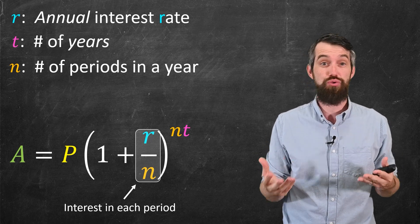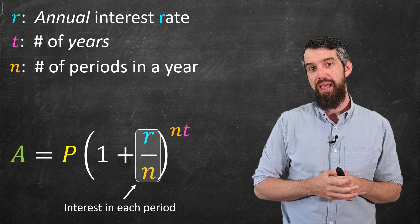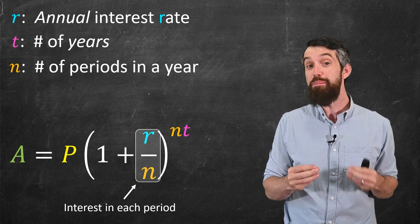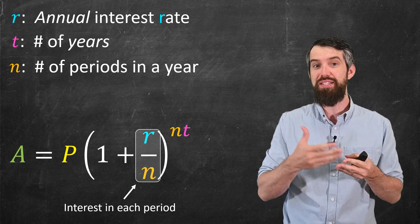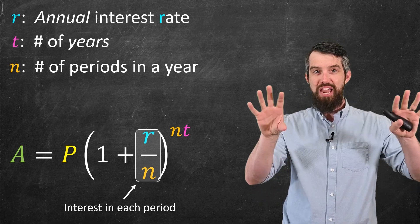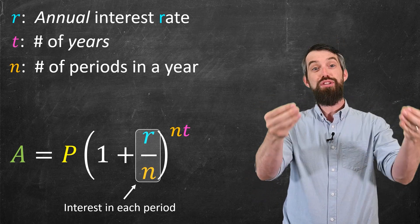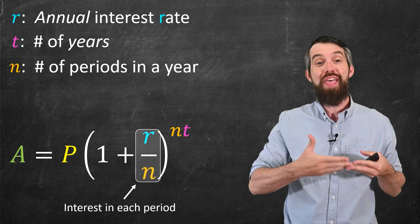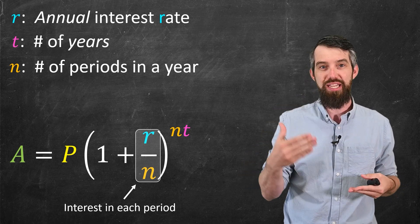The idea here is, suppose you have an annual interest rate r of 10%. And what we're doing is, if we compound, say, monthly, where n is equal to 12, you're taking that 10% annual interest rate, you're dividing it by 12, and that's how much interest you're applying on each month.